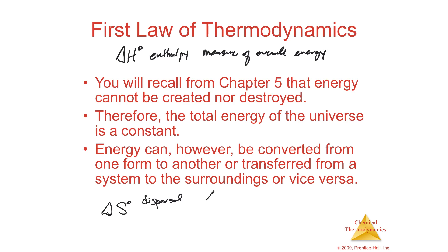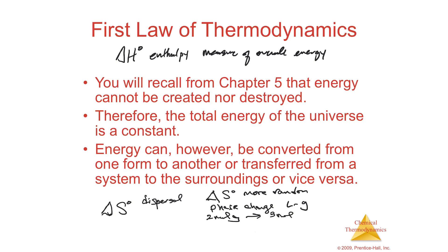For a positive delta S, you want more chaos and randomness. You can change phase — going from a liquid to a gas means particles were closer together and are now farther apart, giving higher entropy. You could also go from two moles of gas at the beginning to three moles of gas at the end. Three moles of gas is more random and disorderly, so going from two moles to three increases entropy.